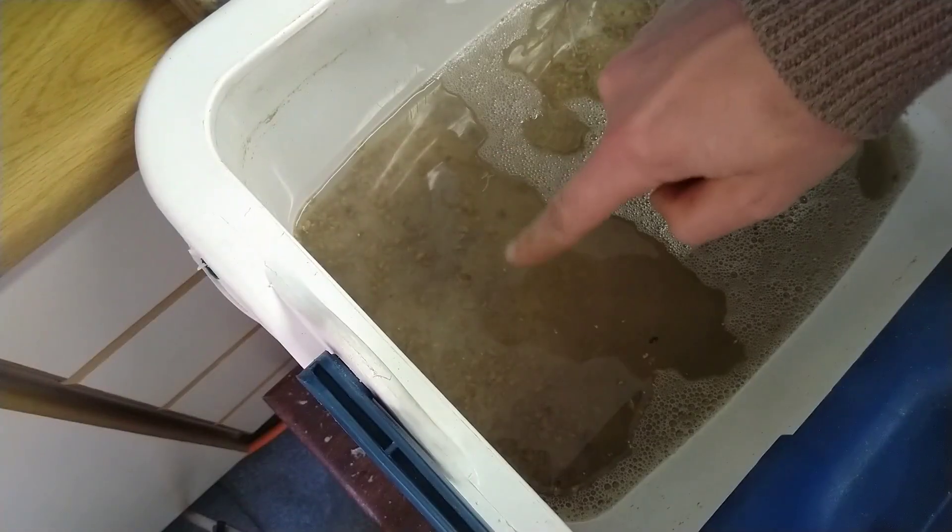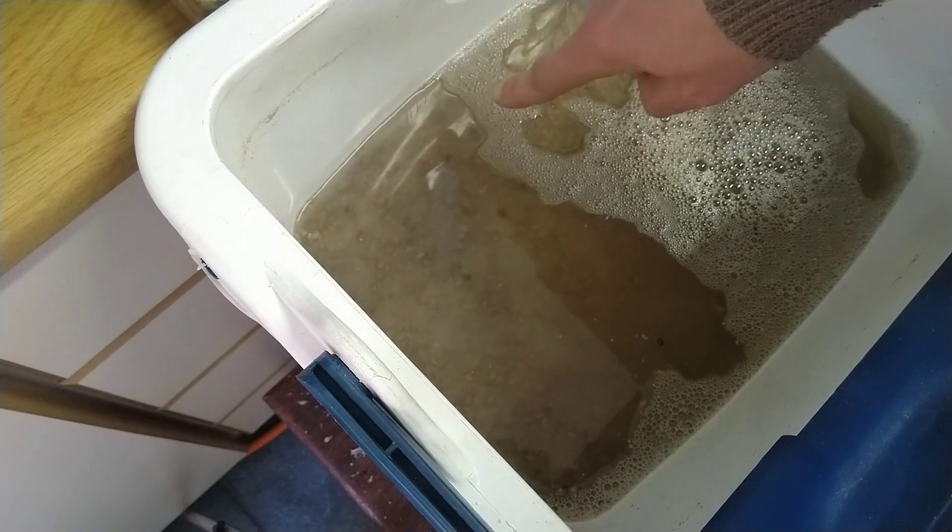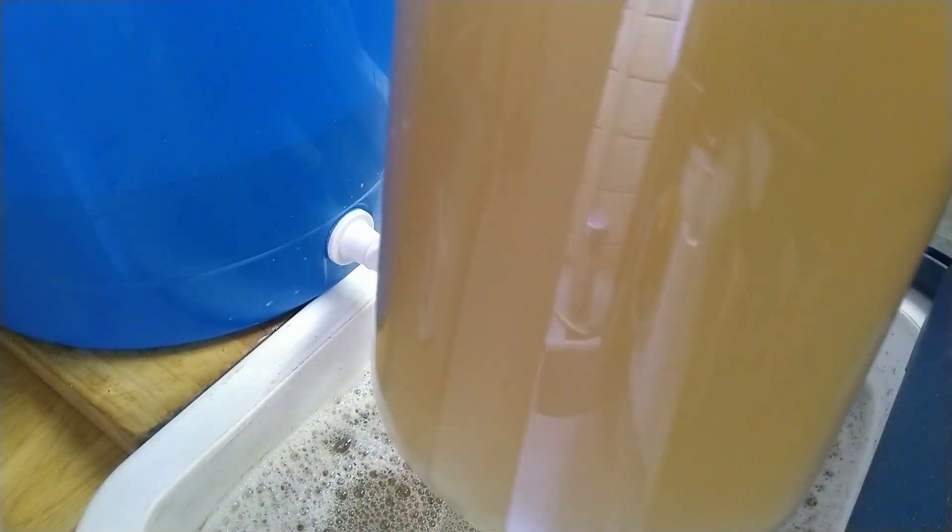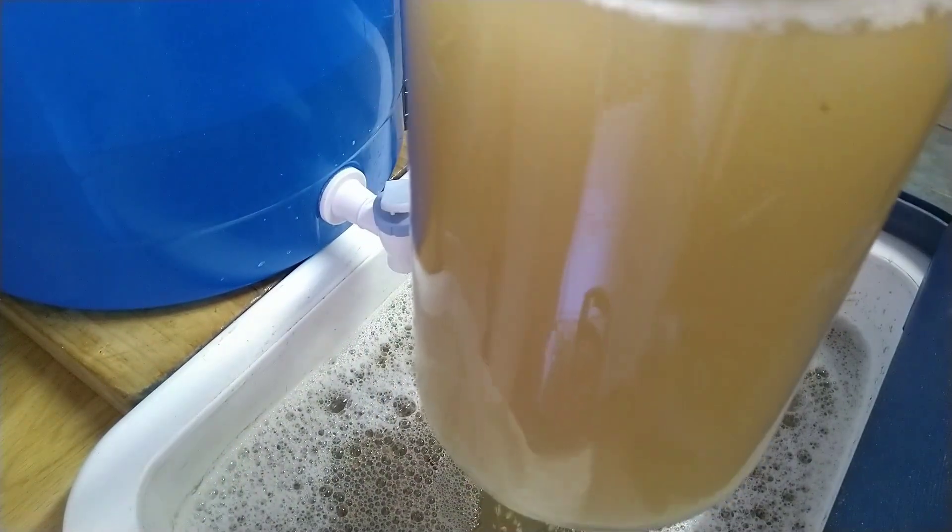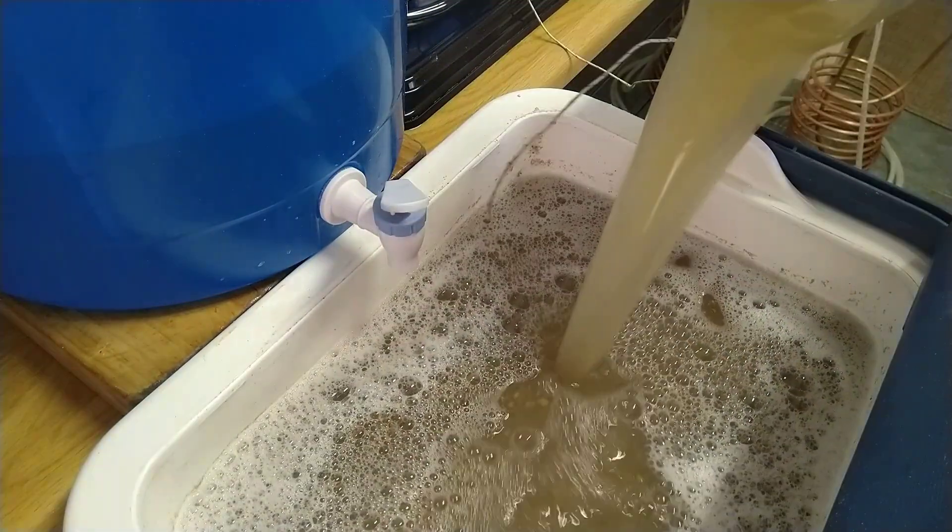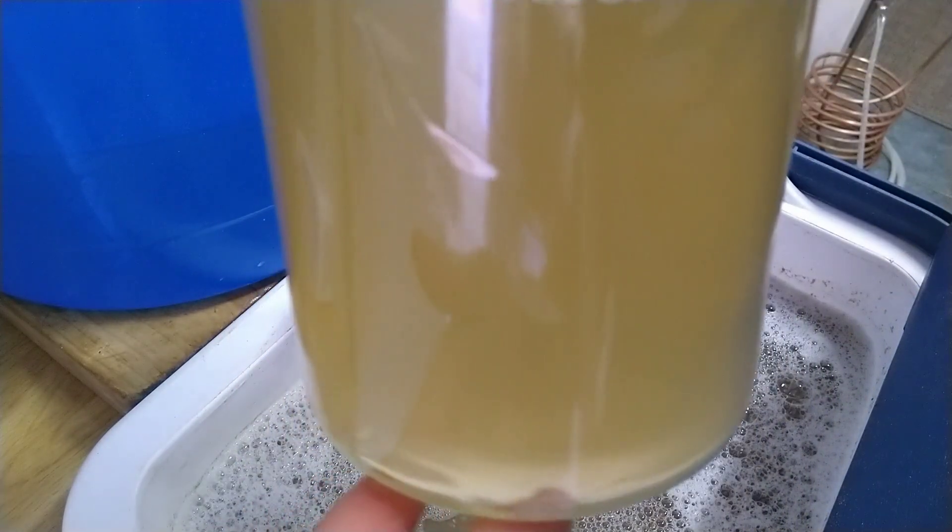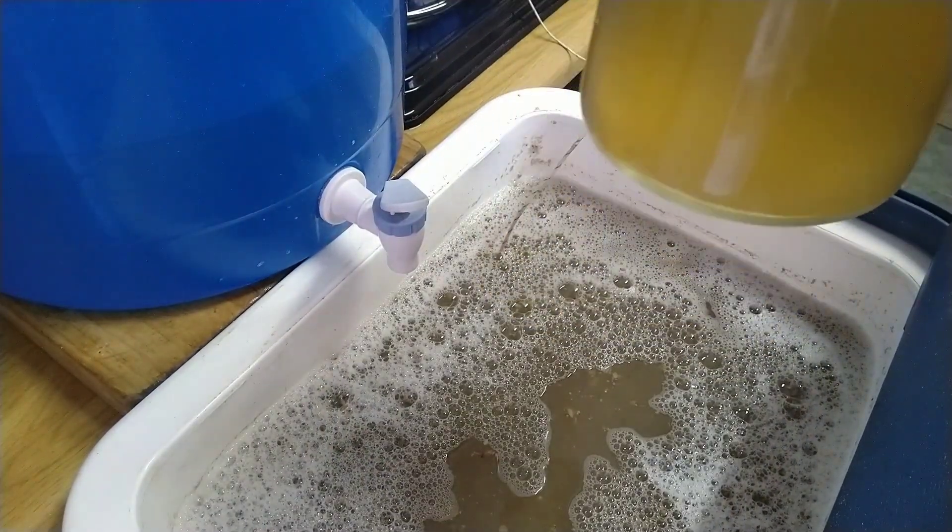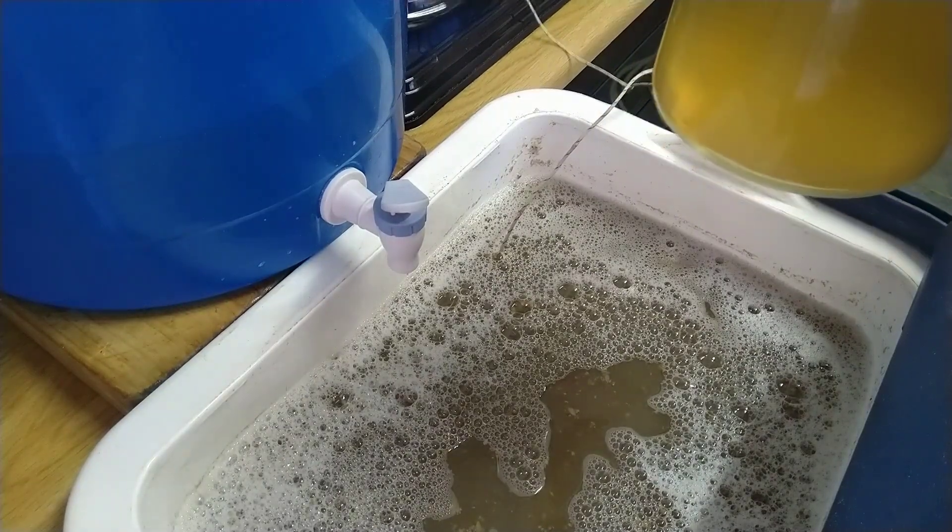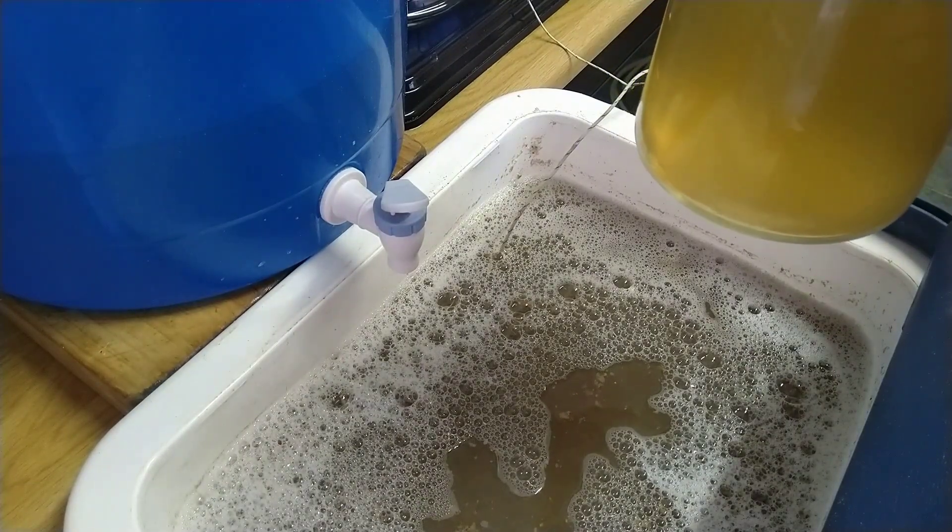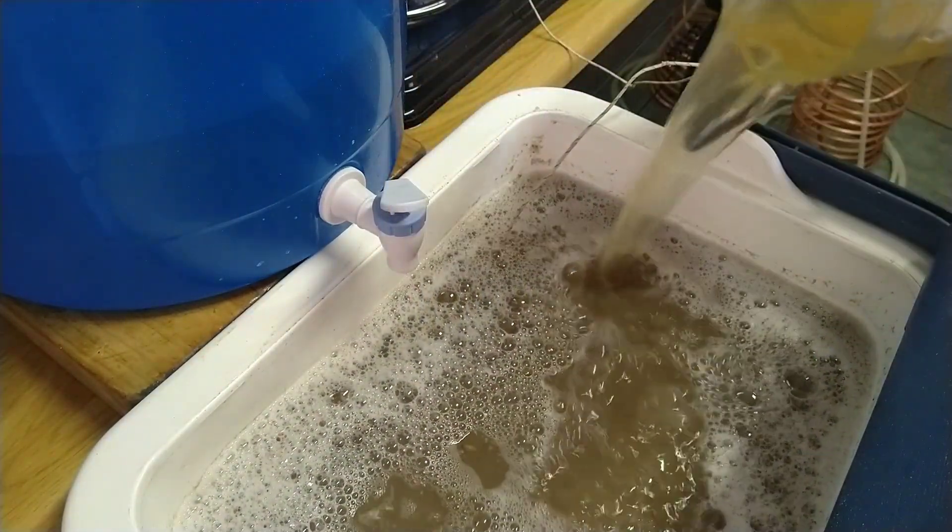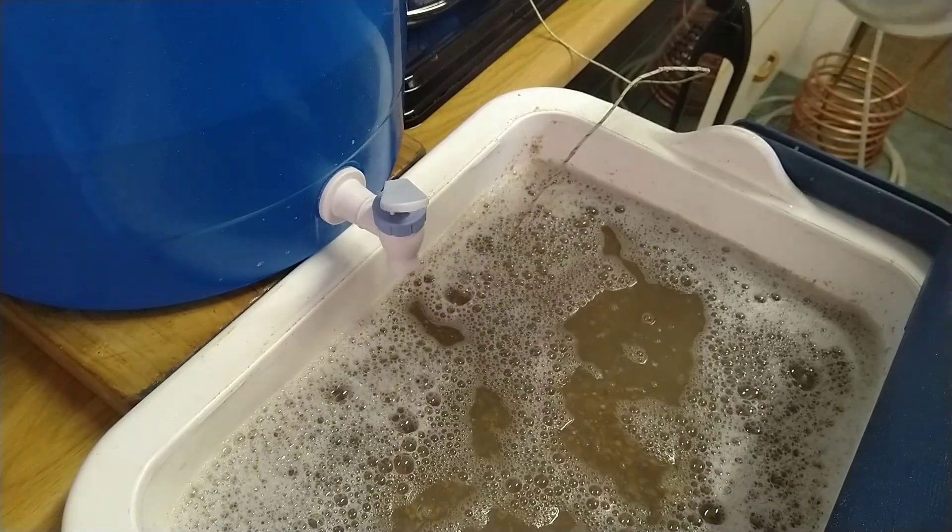This is the grain bed acting as a filter. I'm scooping liquid from the boil kettle and returning it to the mash tun. This is called a vorlauf. I don't normally do this; if I had a pump I'd probably do it more, recirculating from the mash tun back until it starts running clear.